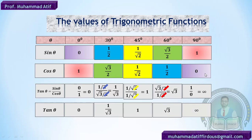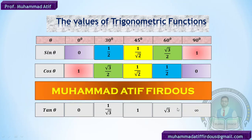So we have the values of tangent at 0°, 30°, 45°, 60°, and 90°. Hope you enjoyed this — just remember these values in order.